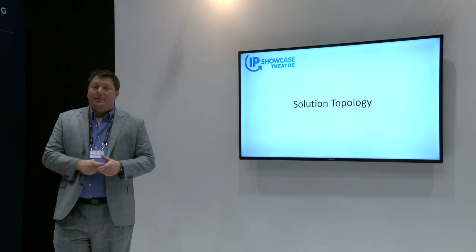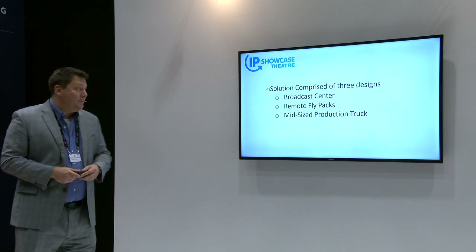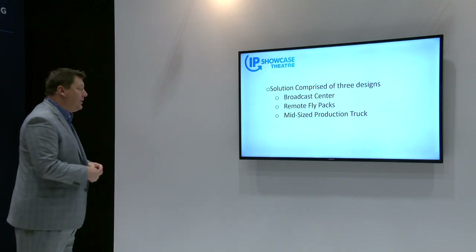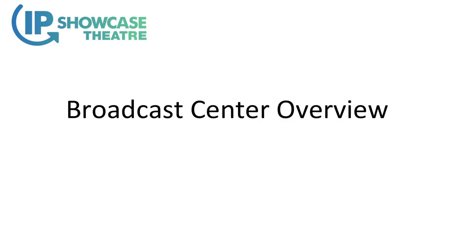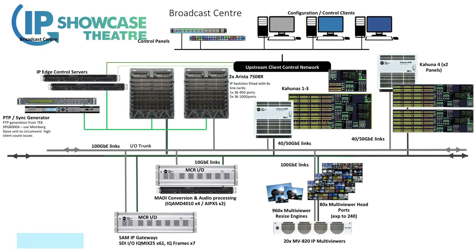Let's look at the topologies. It was broken up into three parts: a broadcast center, remote flypacks, and a mid-sized production truck. We'll start with the broadcast center — I know people in the back may not be able to read this, but we'll work with what we've got here.